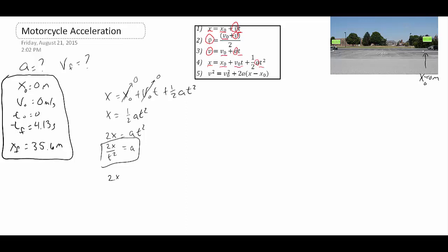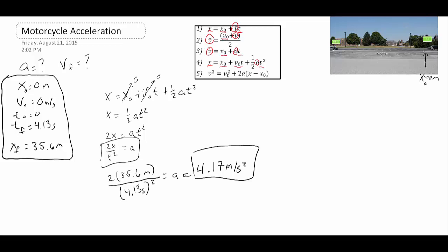Now we plug in our numbers: a equals 2 times 35.6 meters, divided by 4.13 seconds squared. Calculating that gives us 4.17 meters per second squared — meters up top and seconds squared on the bottom — which is the unit of acceleration. That's a quick way to find my acceleration.